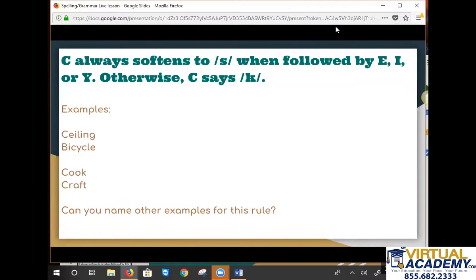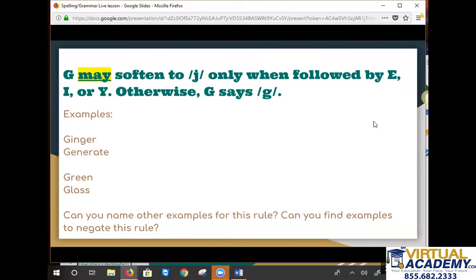Good. All right, we have one more spelling pattern for you, a trickier one. G may, that's the keyword here, soften to a J sound but only when followed by E, I, or Y. Otherwise G has the hard G sound. Good. So we have examples of ginger. There's two G's in there, Mr. Schmidt. They both make the J sound. One's following an I, or I follows the one G, and an E follows the other G. So both of those G's are correct. Or generate, that E is following the G. Otherwise we have green or glass. Now there's a lot of examples that would negate this rule or are exceptions to this rule. Can you find some?